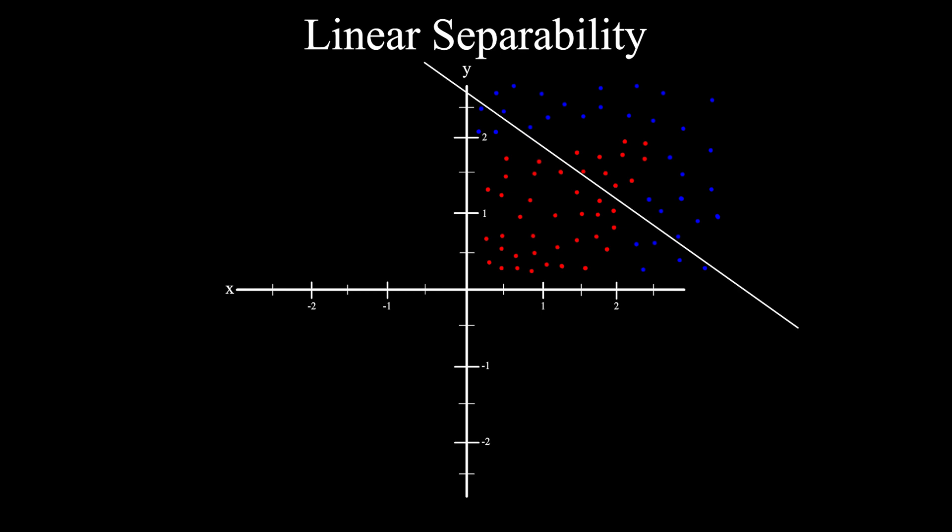There is also one really big limitation of a perceptron. It can only correctly classify data that's linearly separable. For example, if the data looked something like this, a single line can't separate the data into two parts. Neural networks solve this by allowing the line to bend and turn, but that's beyond the scope of this video.